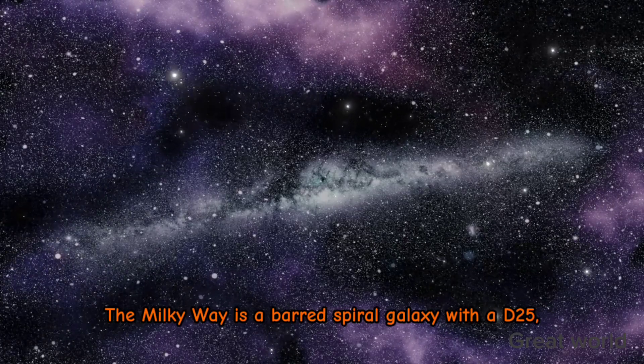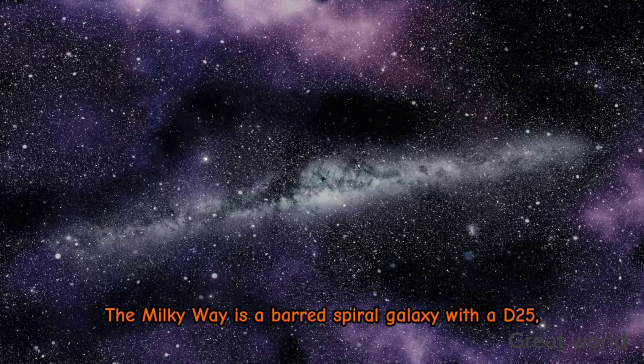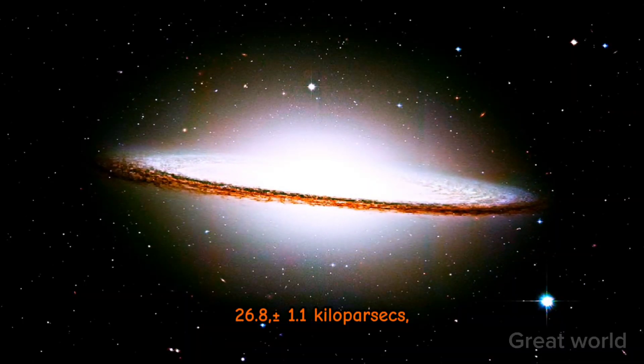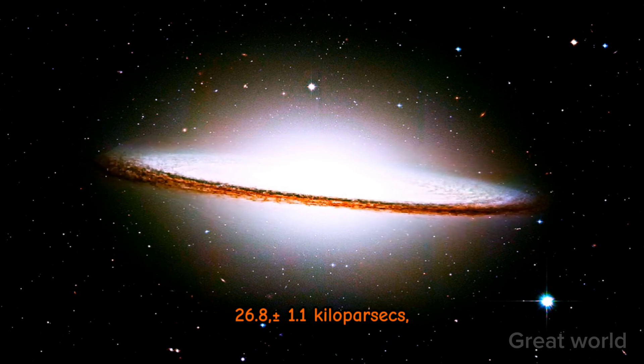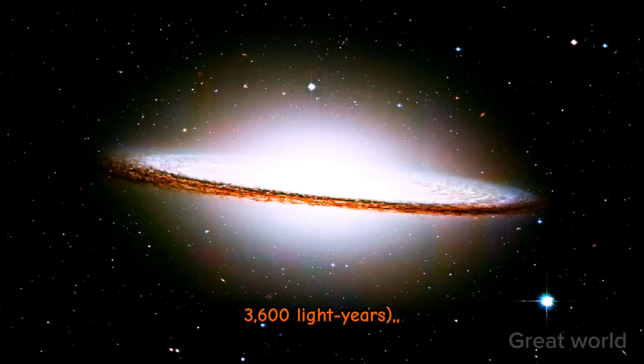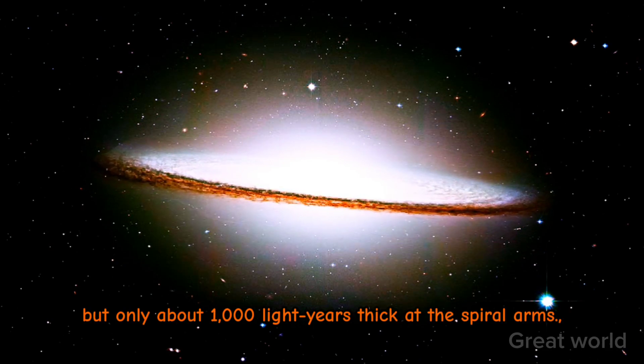The Milky Way is a barred spiral galaxy with a D25 isophotal diameter estimated at 26.8 plus or minus 1.1 kiloparsecs (87,400 plus or minus 3,600 light-years), but only about 1,000 light-years thick at the spiral arms.